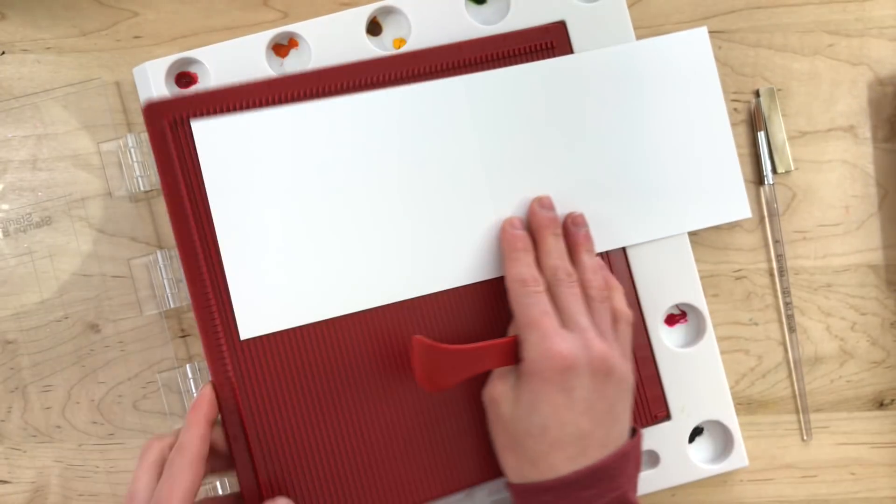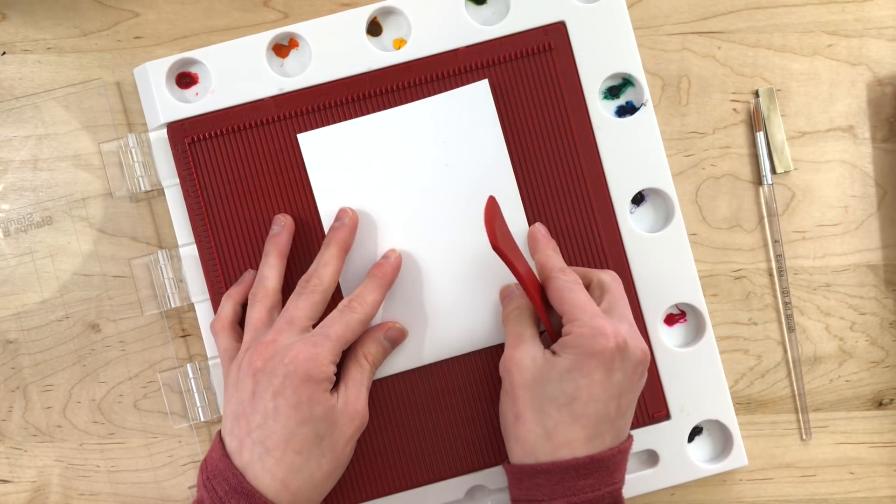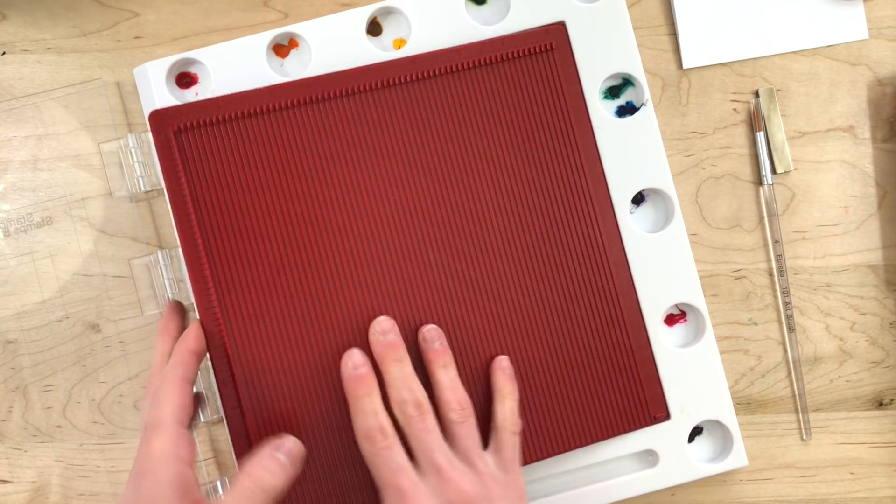What's really nice about the scoring board is that it fits inside of that stamping area and it does not shift, which is sometimes a problem with other scoring boards.